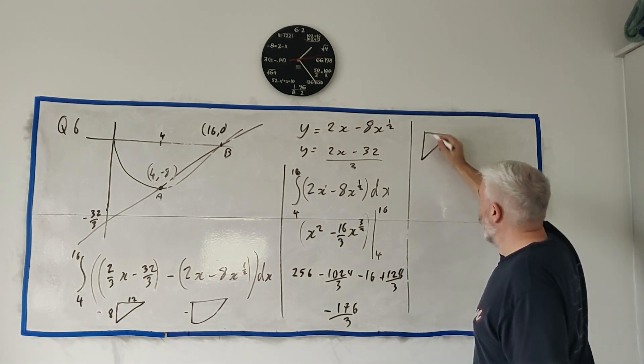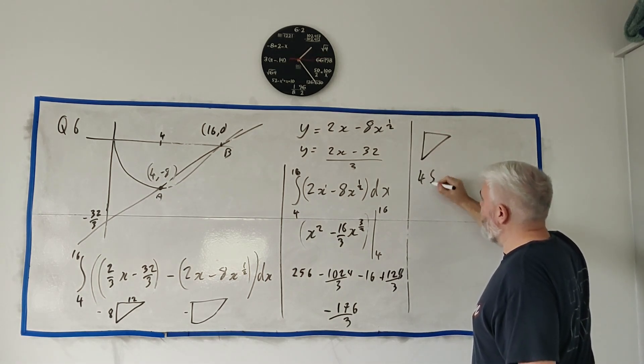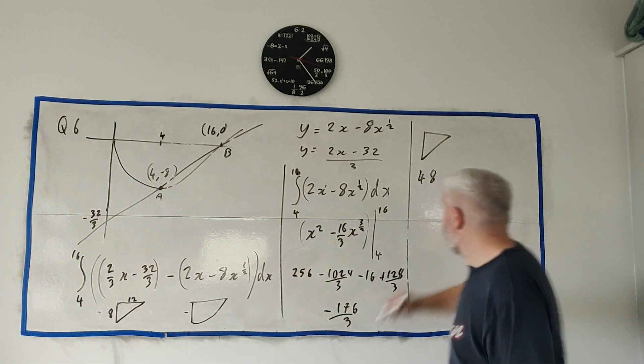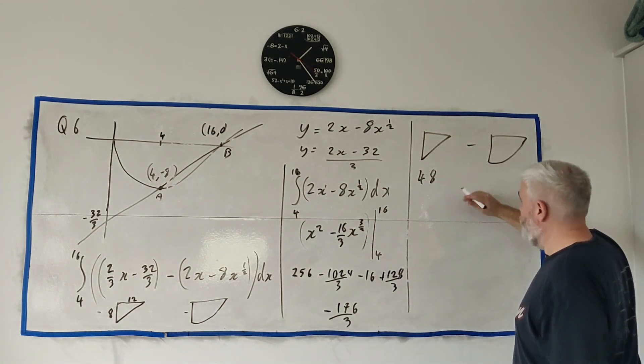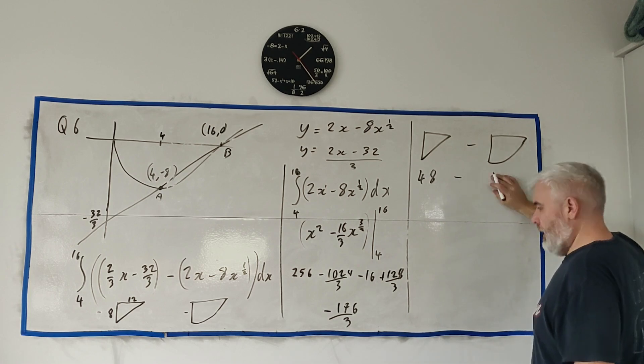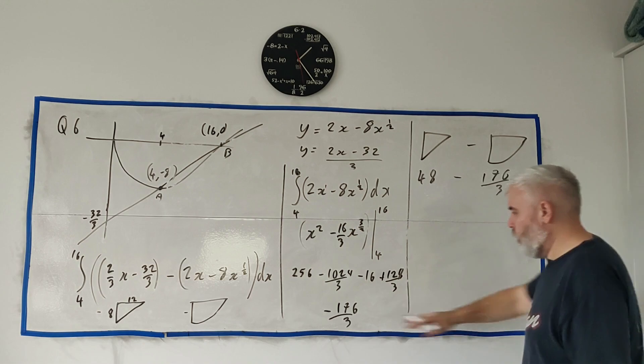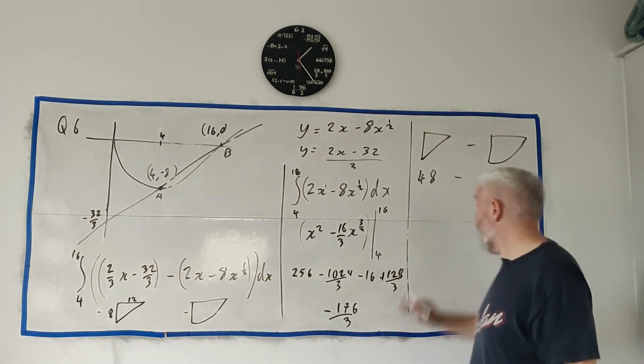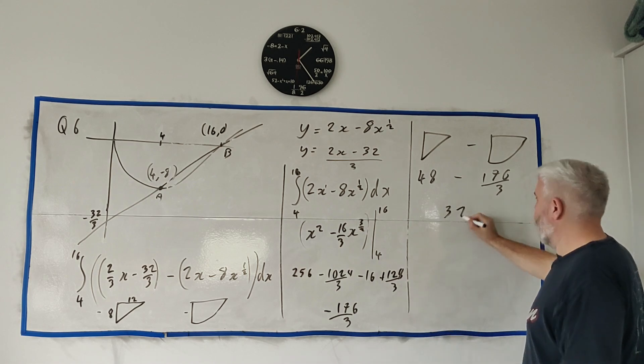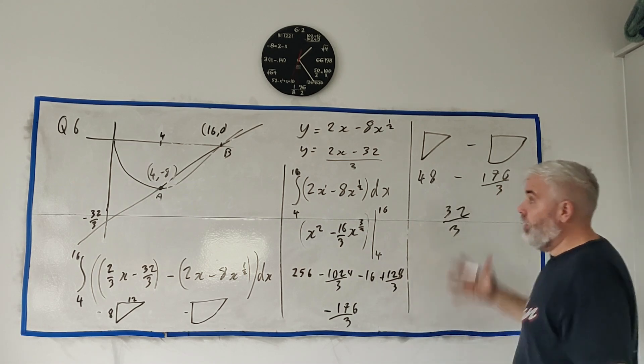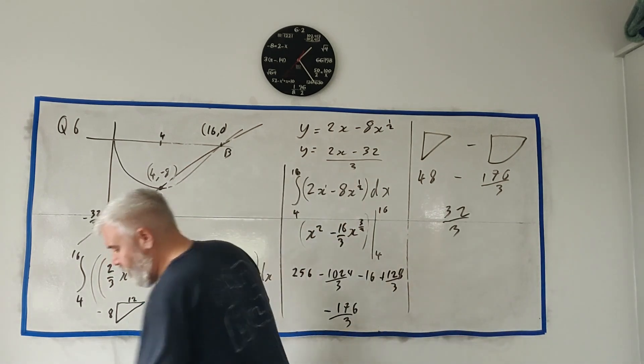Let's throw that. This triangle, which we already said was 48. And minus this shape. Let's see, minus this shape, which we now know is minus 176 over 3. Again, we change this to a positive in our head. And then we're taking away from that. And do that sum out and we get 32 over 3. And that's the area of this little sliver in here.